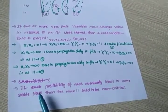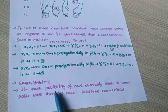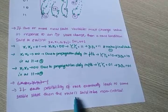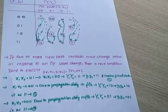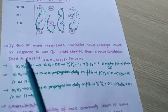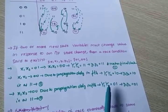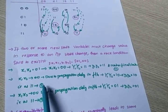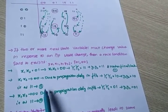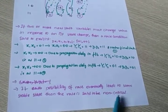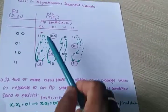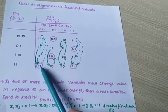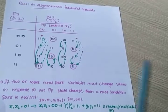If each possibility of a race eventually leads to the same stable state, then the race is said to be non-critical. In this condition, the first race path gives 1, 0 and the second gives 0, 1, but in both cases the system finally reaches 1, 1 stable state. So there is no problem — it is called a non-critical race.